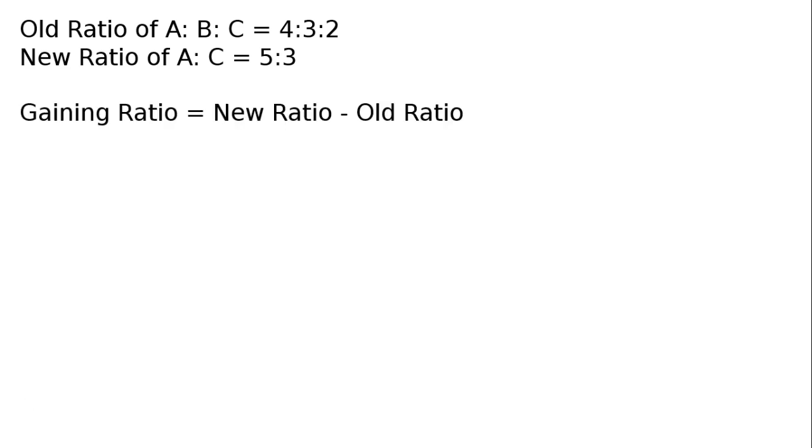Gaining ratio equals new ratio minus old ratio. A's gain equals 5 by 8 new share minus old share ratio 4 by 9. LCM 72, that's 8,9,72. Numerator will be 9 × 5, 45 minus 8 × 4, 32. That is equal to 13 upon 72.